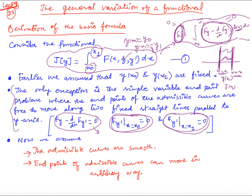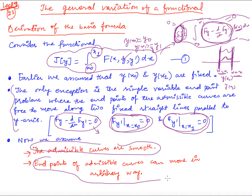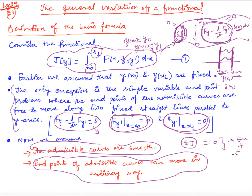Today, we want to know when there are no restrictions on the boundaries, how to obtain the Euler's equation and the corresponding constants in the solution. The variation equal to 0 gives us the Euler's equation plus extra conditions used to determine the constants. In the previous case, these two conditions gave the constants. Now similarly, we want to know the form of the Euler's equation and the extra conditions when endpoints are completely free.